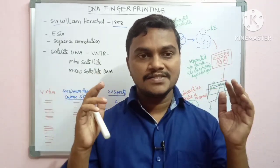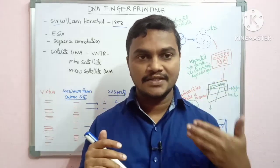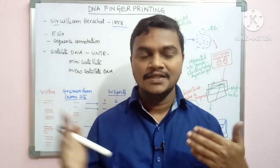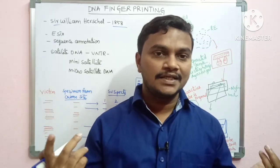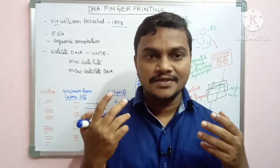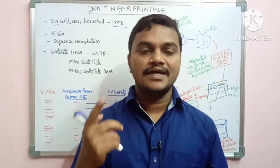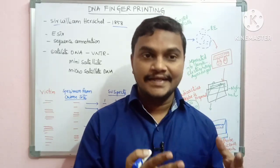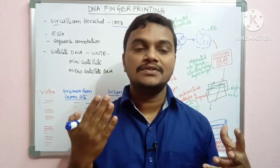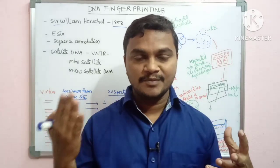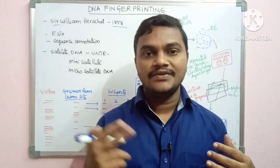In DNA, there is variation in an individual person's DNA that is also called satellite DNA. Satellite DNA contains a variable number of tandem repeats — VNTR.